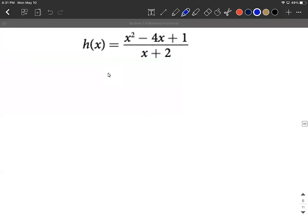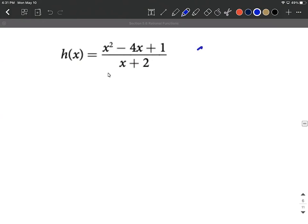On the next one, we have x squared minus 4x plus 1 over x plus 2. Again, we're going to be doing that same comparison. We're going to be looking at the degree of the numerator. In this case, it's going to be 2 compared to the degree of the denominator.